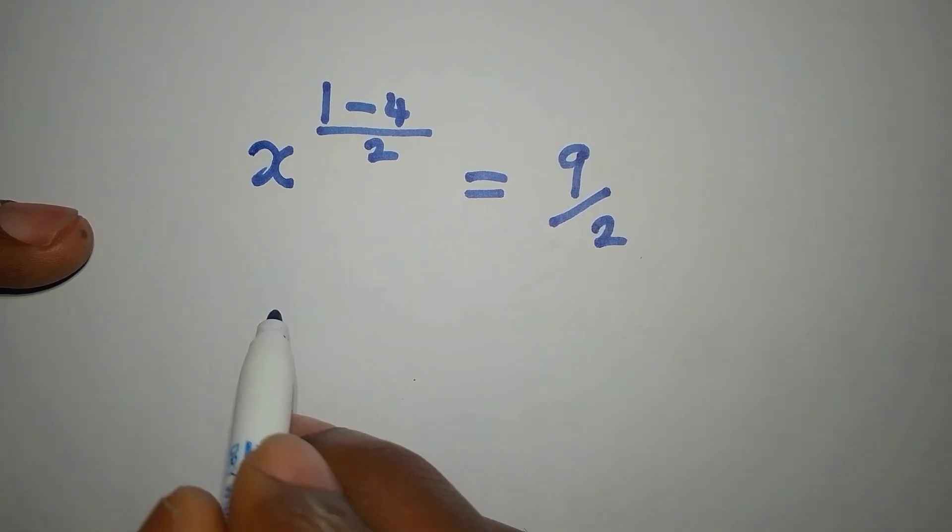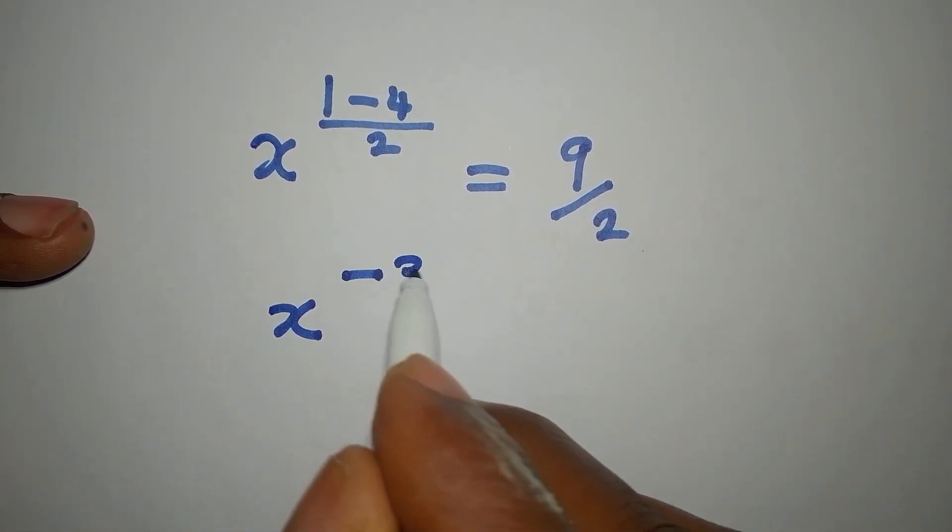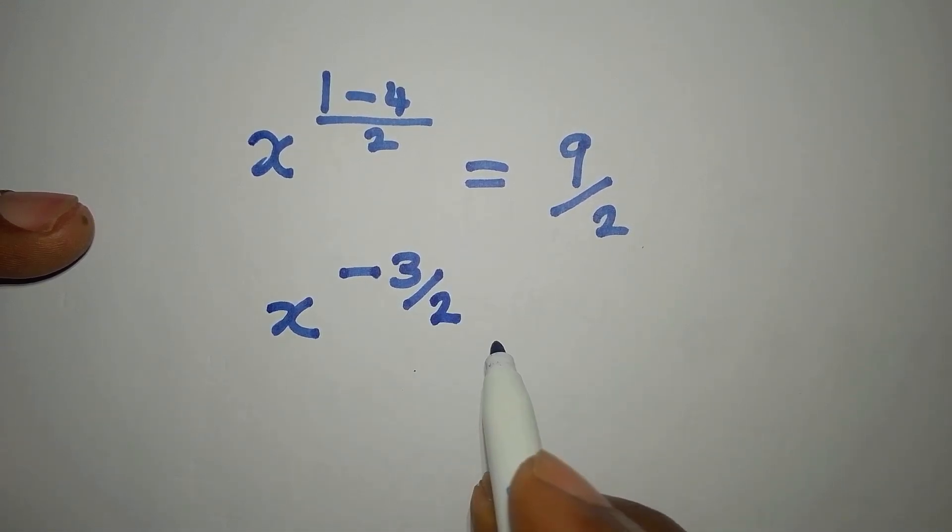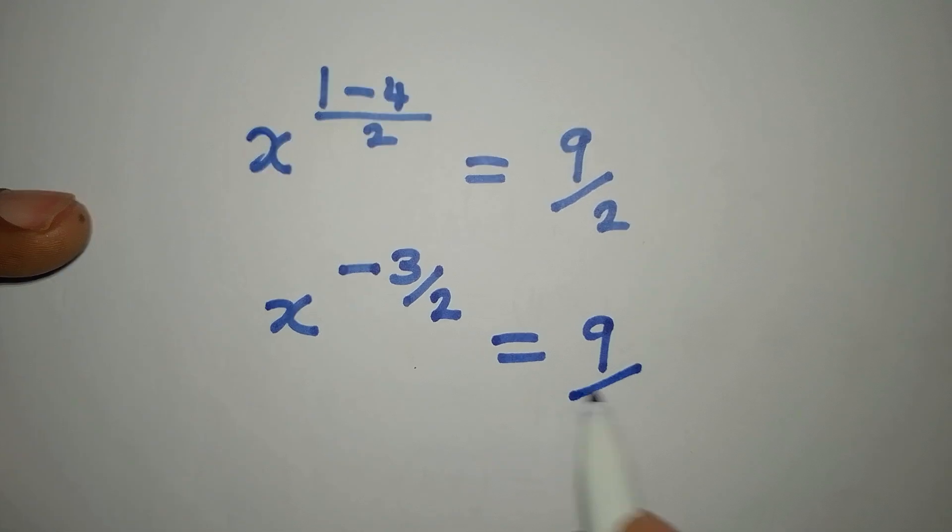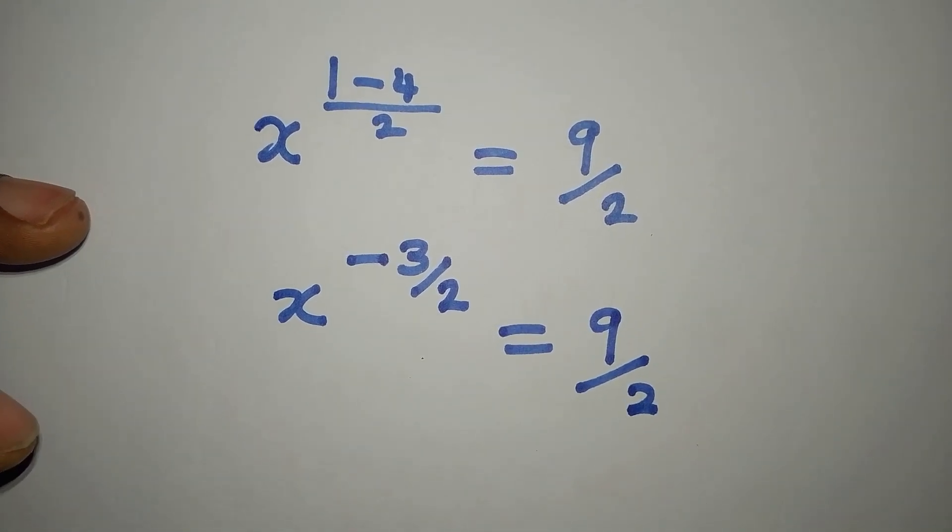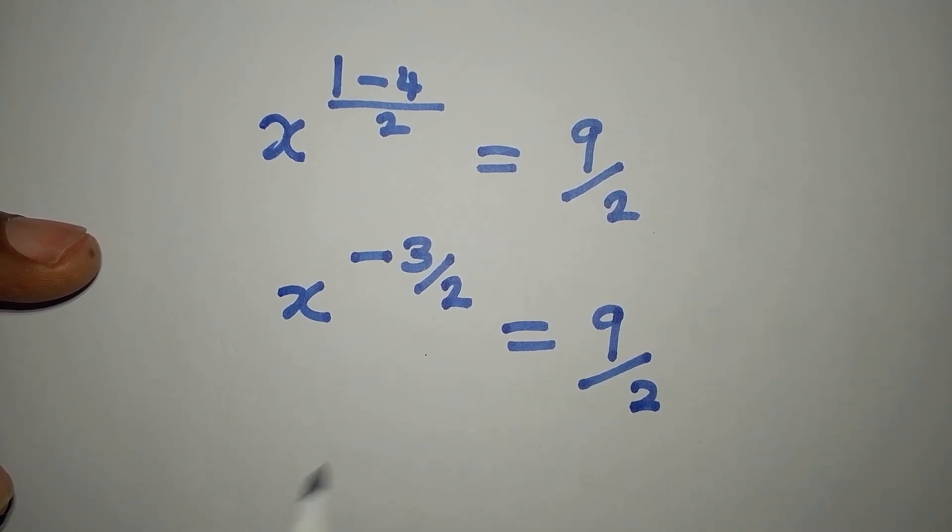Okay, so from here we have x^(-3/2) = 9/2. Right now we are interested in removing this power from here.